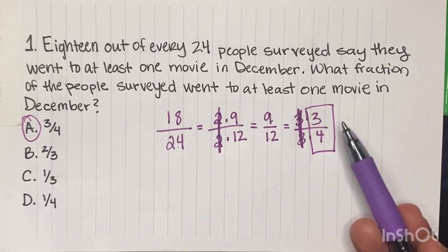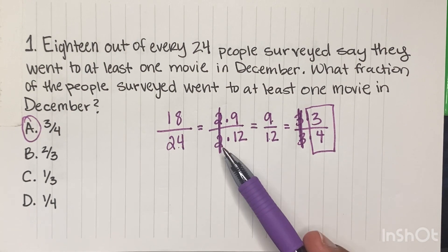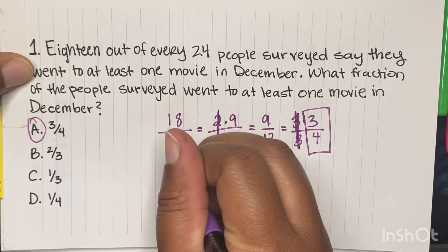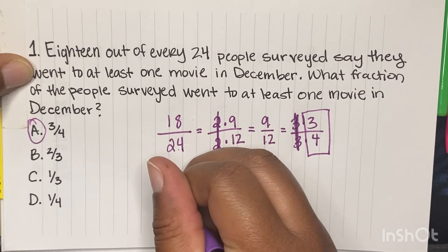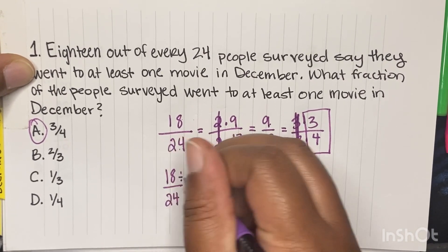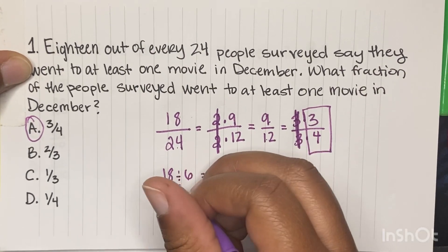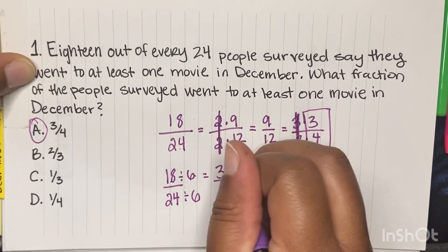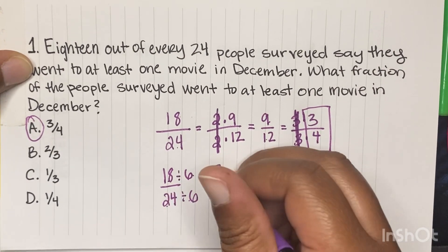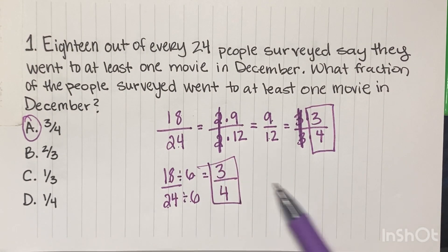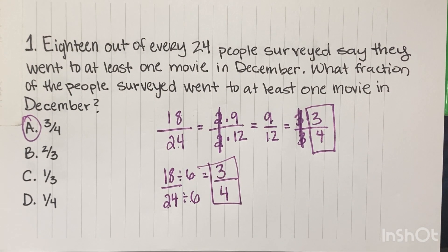There's a different way: if you know right away that 6 goes into both of these, you could have just divided by 6. But that's only if you're good at your multiplication and you can see it. So 18 divided by 6 is 3, and 24 divided by 6 is 4. There are multiple ways to get to your answer. Whatever works for your brain, you do that method.